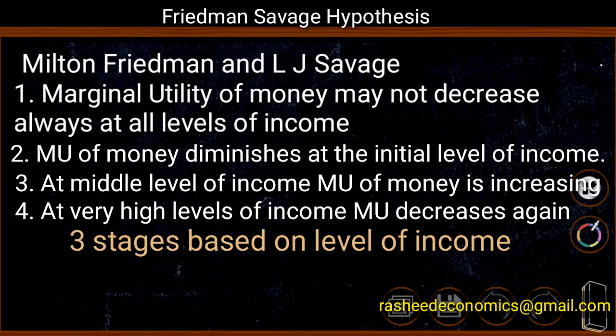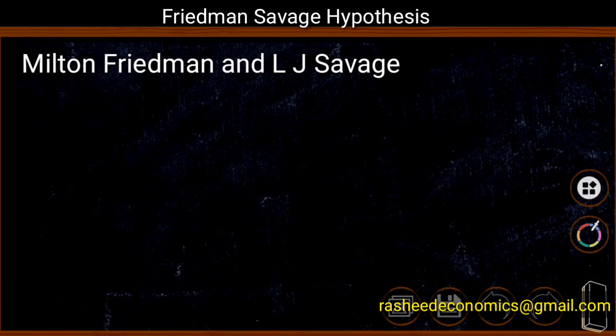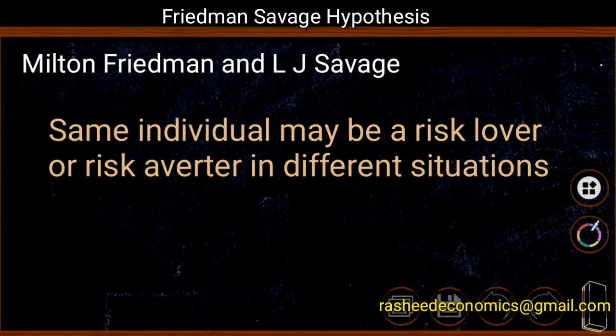Therefore, when the marginal utility of money is decreasing, an individual tries to avoid risk. And when the marginal utility of money is increasing, he will be taking risk. Therefore, the same individual may be a risk lover in some situations and a risk averter in others — this depends upon the money income of the consumer.